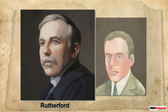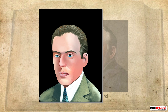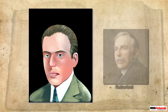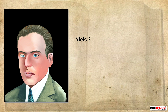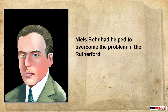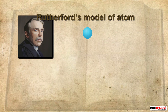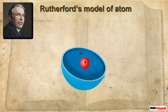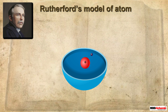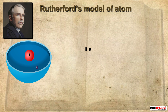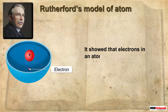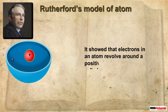Rutherford's model was the closest to the Bohr model of the atom. In fact, Niels Bohr helped to overcome the problems in Rutherford's model. Rutherford's model had a major drawback: it could not explain the stability of the atom. It showed that electrons revolve around a positively charged center called the nucleus.